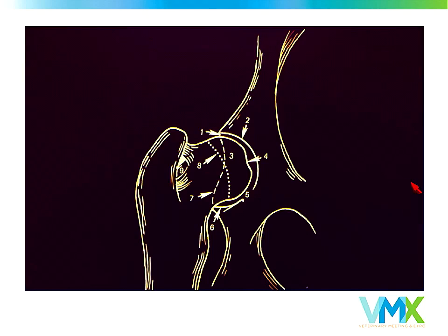Lastly, we look at the femoral neck and the margins of the acetabulum, both cranial and caudal. This is where we typically see remodeling changes as we get into the more dysplastic dogs — the moderate and the severe.